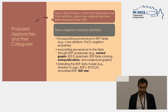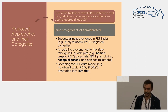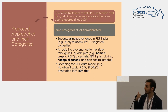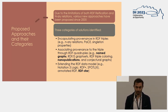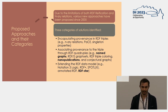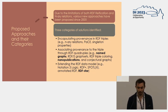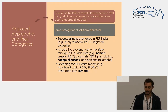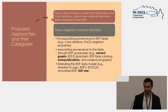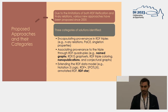Due to these design limitations, various new approaches have been proposed since 2005. We can classify them into three categories. First, you can encapsulate provenance in RDF triples — N-ary relations, patch and singleton properties. Second, you can associate provenance by extending the triple into a quadruple compliant with RDF 1.1: named graphs, RDF graph sets, RDF triple coloring, nanopublications, and conjectural graphs. Named graphs and nanopublications are quite well-adopted solutions.